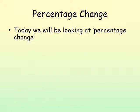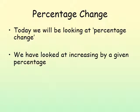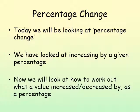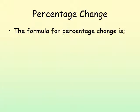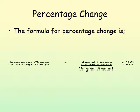Moving on to today, we will be looking at percentage change. We have looked at increasing by a given percentage, for example 10%, 1%, etc., and then obviously either adding or decreasing amounts. Today we are going to look at actual values going up and showing those as a percentage. For this you need to be aware of the formula: we work out the change, put it over the original amount, and multiply it by 100. The actual change is either given to you or you will have to calculate it.